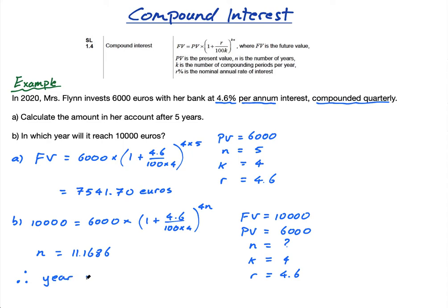Now this is—I find this very confusing because it doesn't say find n, it says in which year. So when it says in which year, it means is it 2020 or 2021 or 2022. So we need to find the year. 11.1686—let's think of it this way.